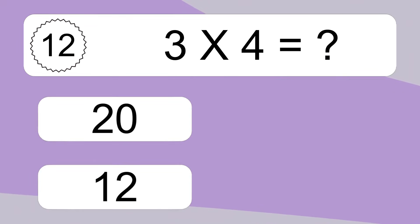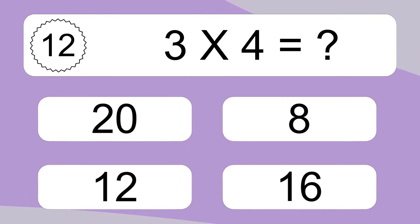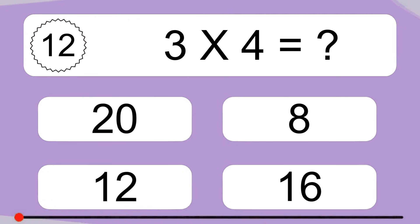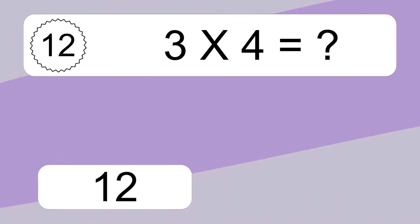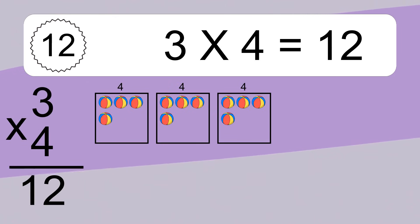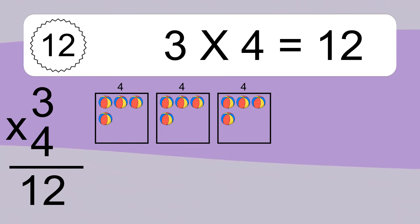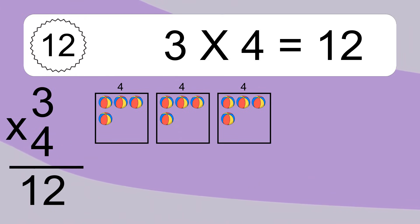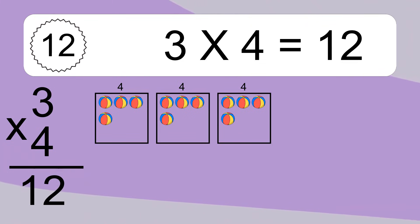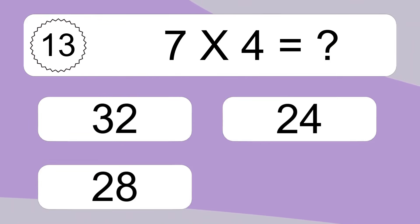3 times 4 equals what? 3 times 4 equals 12. We have 3 boxes, and each box has 4 colorful balls inside. If you count all the balls in all the boxes together, you will have 3 times 4 balls. This equals 12 balls.